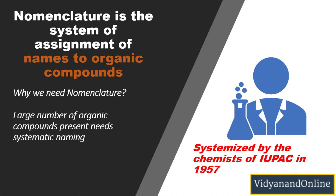So what is nomenclature? Nomenclature is a system of assigning names to organic compounds. We have millions of organic compounds, and in order to assign a name to each one, we need to follow a certain system — and that system is known as nomenclature. A large number of organic compounds are present and we need to name them systematically. That is the reason why nomenclature is done.